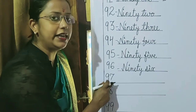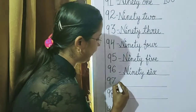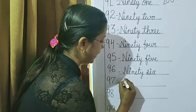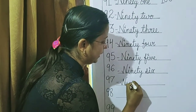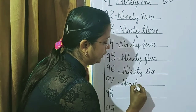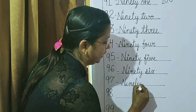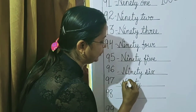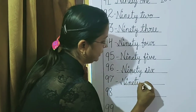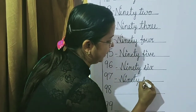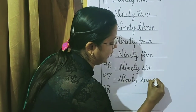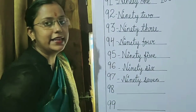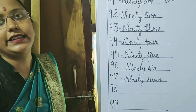Then, children, 97. N-I-N-E-T-Y for 90. Then, 7 — S-E-V-E-N. So that is 97.